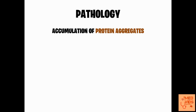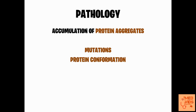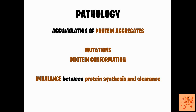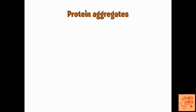Neurodegenerative diseases mostly will have accumulation of protein aggregates in the neurons. The main common cause of this accumulation is found to be various mutations which affect protein conformation and various other changes in the proteins, leading to abnormal accumulation within the neurons and causing damage. These mutations lead to an imbalance between protein synthesis and clearance — there'll be synthesis of abnormal proteins and clearance of these abnormal proteins will also be affected, leading to excess accumulation of abnormal proteins within the neurons. These protein aggregates are known to elicit an immune response, leading to further neuron damage, and they are per se toxic to the neurons.